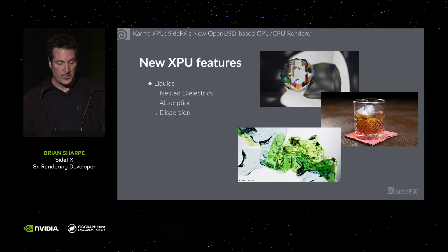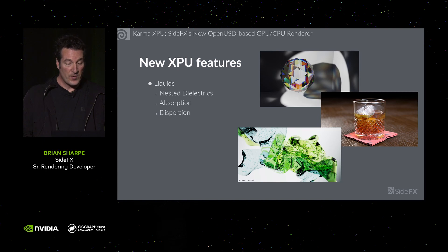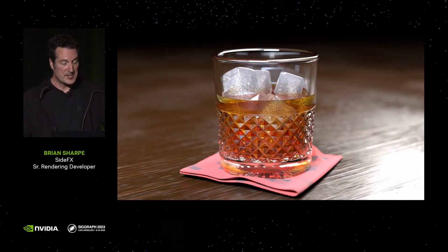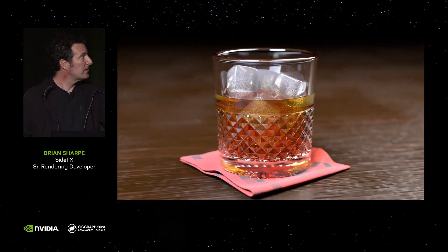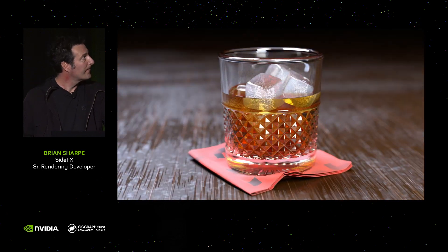We've improved our liquids, so that includes nested dielectrics, which is when you can have things like ice within water within a glass. There is also absorption, where transparency can change over depth. And also dispersion, which is when light splits into a rainbow when it refracts through glass. Here is a whisky glass showing nested dielectrics, and there's also subsurface scattering on the ice cubes. Very cool.